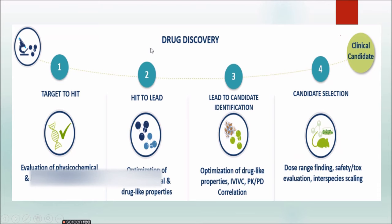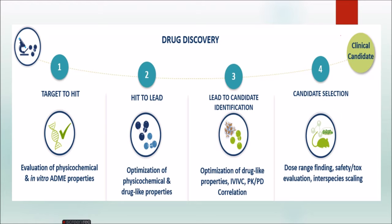Now, let's have a glance at how drug discovery takes place. It involves around four steps. Step one is target to hit — you choose a target, the protein. Step two is hit to lead — you choose the ligand with proper drug properties. Step three is lead to candidate identification, where you combine steps one and two: you take the protein and the ligand with drug properties and combine them, which is called docking studies. Finally, when docking is successful, you go with candidate selection and test with some organisms, leading to a clinical candidate after all successful data and results are obtained.